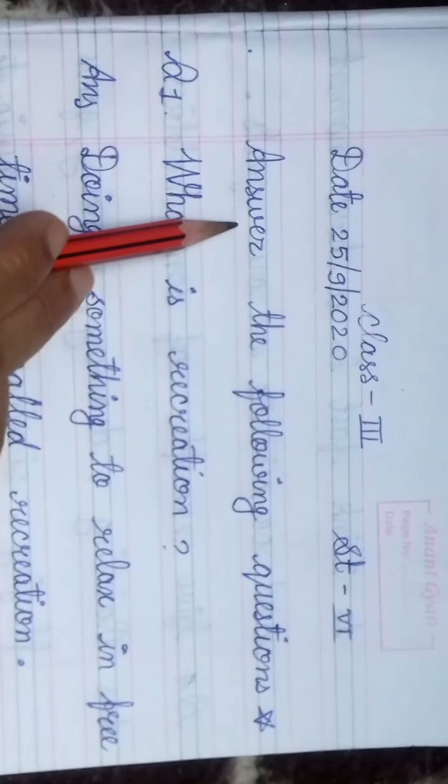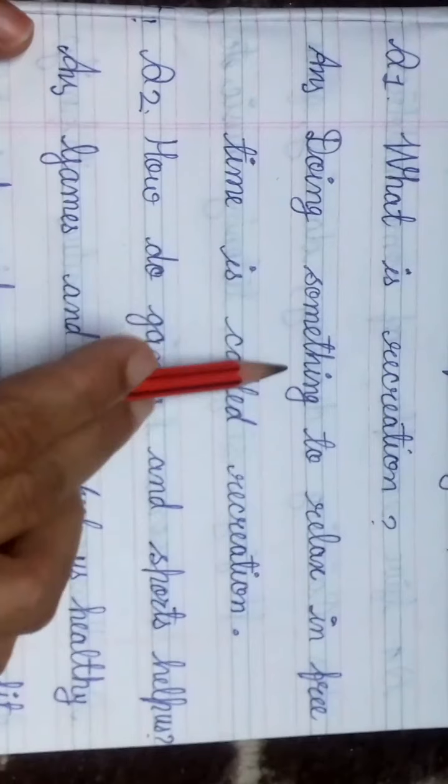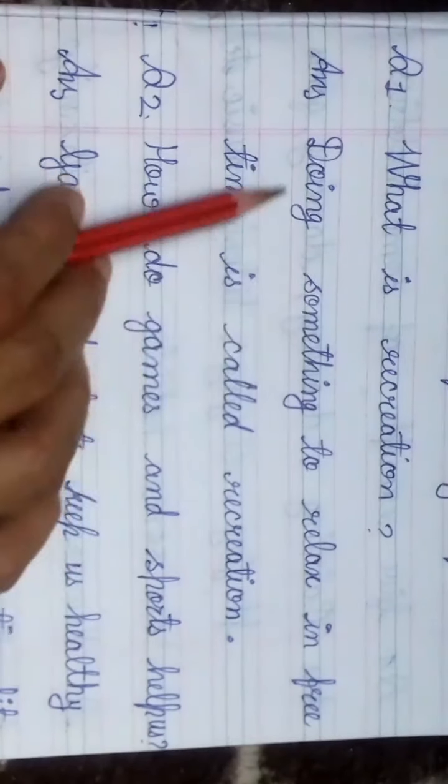In this stage 6, we solve — answer the following questions. First question: What is recreation? Recreation क्या होता है? Answer: Doing something to relax in free time is called recreation. Means free time पे जो भी हम करते हैं relax होने के लिए, वो work हमारा recreation होता है.